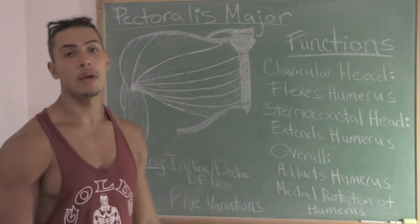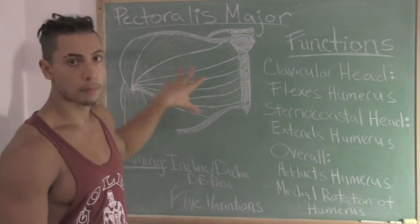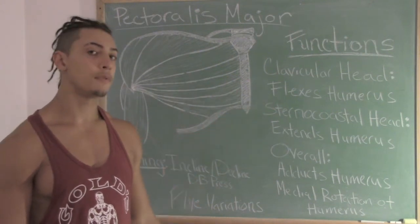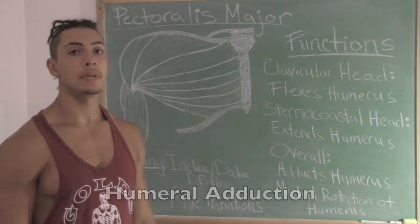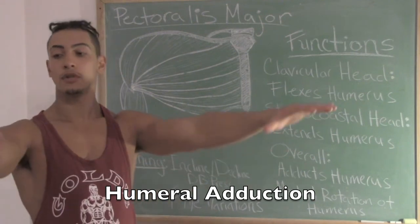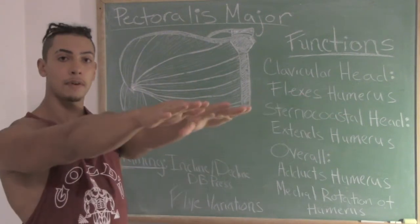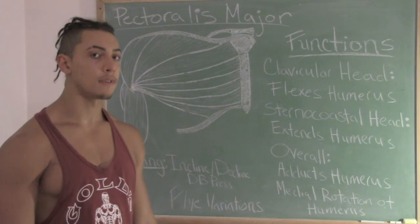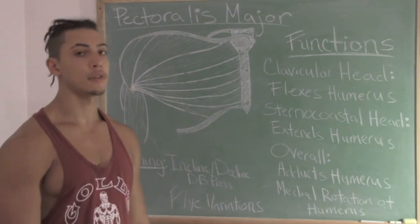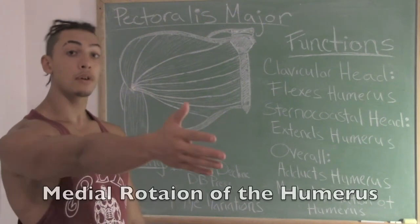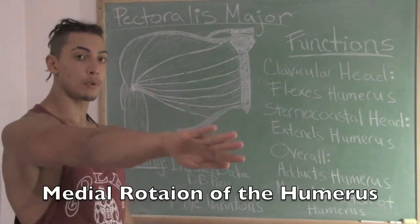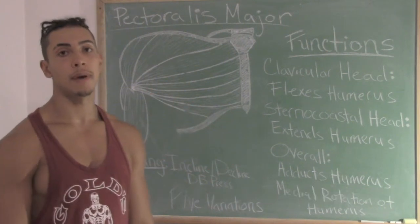Overall, the pectoralis major as a whole — both the sternocostal and the clavicular head — has two functions. The first function is humeral adduction: if you take your two arms and bring them together, that is humeral adduction. The other function is medial rotation of the humerus — if you take your arm and rotate it inwards medially, that's another function of the pec major.